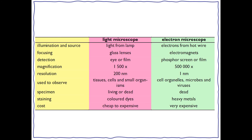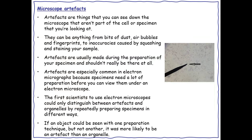For electron microscopes, electrons are focused by electromagnets and detection is by a phosphor screen or film. Magnification is 500,000 times and resolution is 1 nanometre. They are used to observe cell organelles and viruses. The specimen used is usually dead, staining is done using heavy metals, and the cost is very expensive.